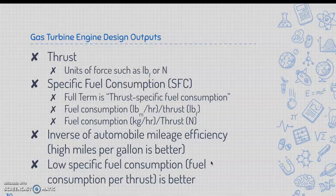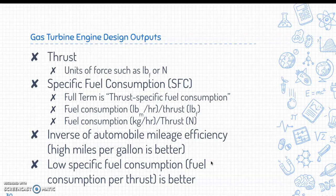The outputs are thrust, measured in units of force such as pound-force or Newtons, and thrust specific fuel consumption (TSFC). TSFC is fuel consumption in pound-mass per hour divided by thrust in pound-force, or fuel consumption in kilograms per hour divided by thrust in Newtons. This is the inverse of automobile mileage efficiency — unlike miles per gallon where higher is better, we want a low specific fuel consumption, meaning less fuel consumed per unit of thrust.